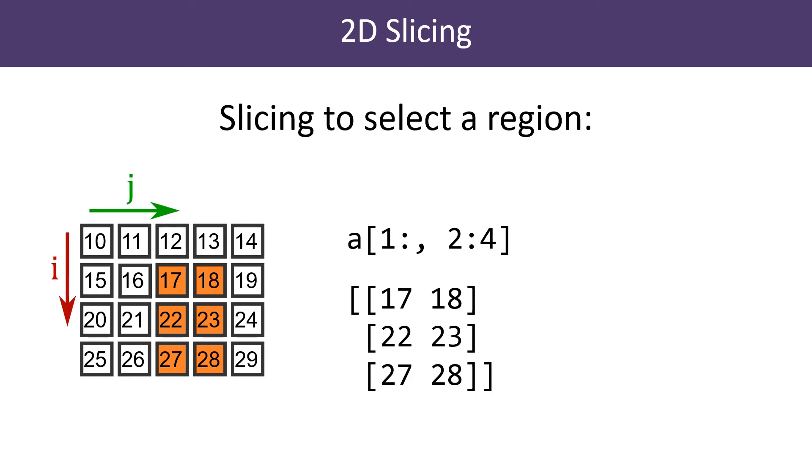The column slice is [2:4], which slices the third and fourth column. The resulting slice is a 3 by 2 array containing the elements that are in the selected rows and columns.